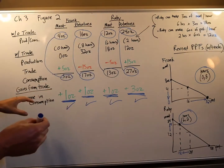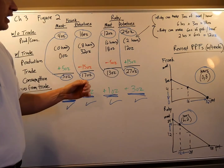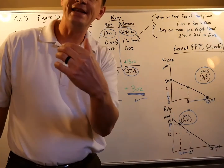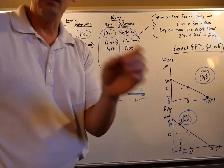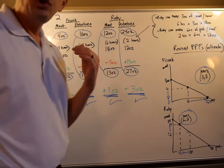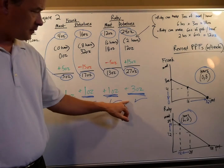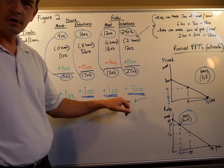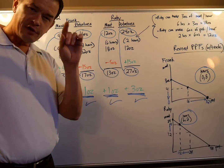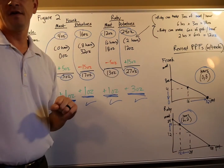Both Frank and Ruby are made better off by trade. A common question: why didn't Ruby send Frank more potatoes since she came out ahead by three? Well, whose idea was it to trade? It was Ruby's - Frank was skeptical. When you're the one cutting up the pie and you had the bright idea, you make the other person better off, but you also deserve compensation for a clever idea. She carved out a little extra for herself for coming up with the trade scheme that benefits everyone.